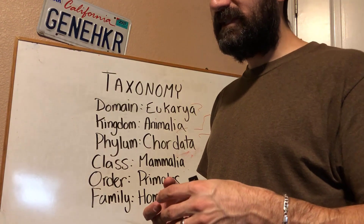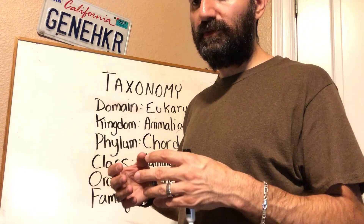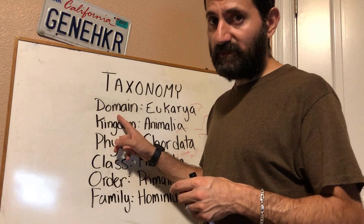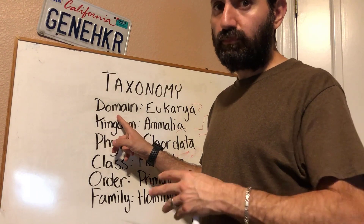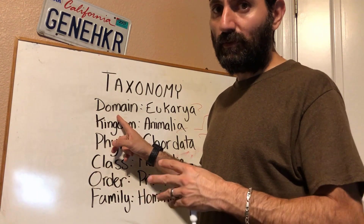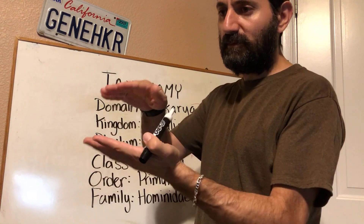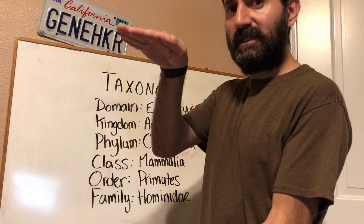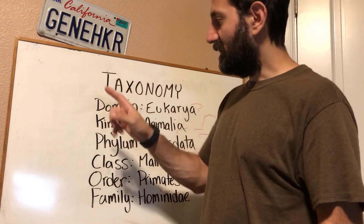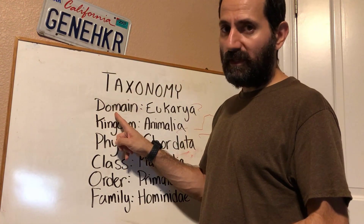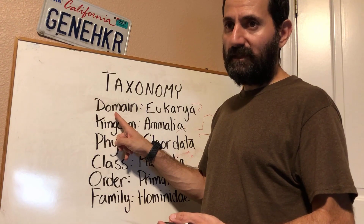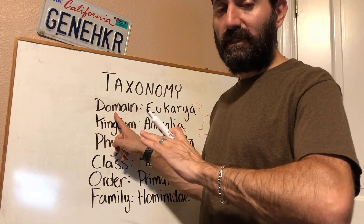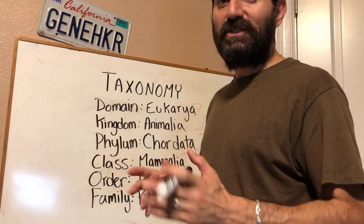So what a taxonomist would do is first group you into what's known as a domain. The domain is the most broad category of taxonomy. Taxonomy works kind of like a hierarchy — you've got the most broad category called domain, and then you've got the most specific category called species.